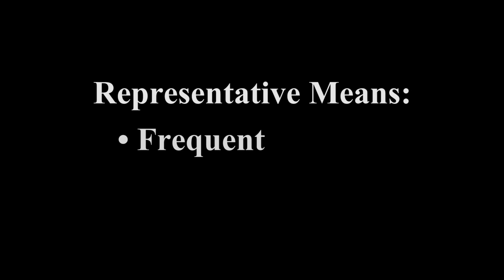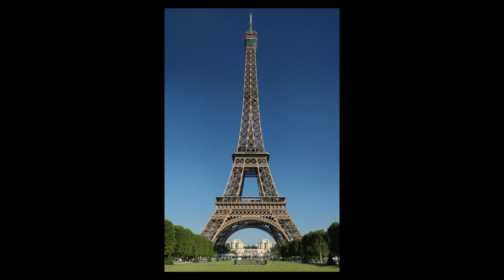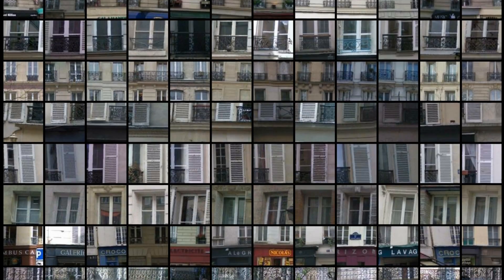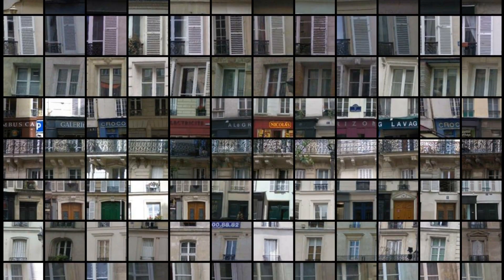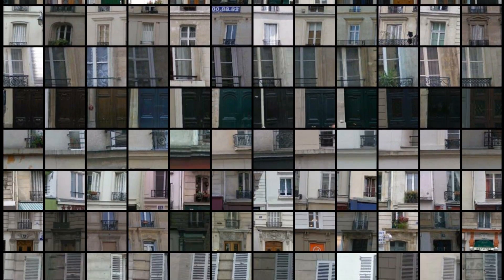To be representative, elements must be both frequent and discriminative. For example, the Eiffel Tower is highly discriminative, but there's only one in all of Paris. Likewise, the world is full of frequently occurring yet uninformative elements, like trees, cars, and empty walls. Our algorithm finds elements by simultaneously optimizing both of these criteria, and for Paris, the results look like this.